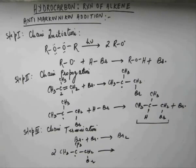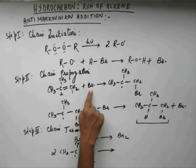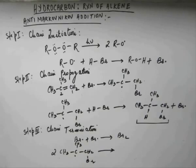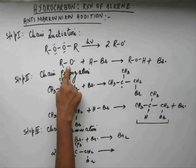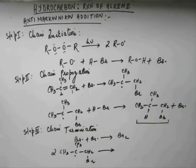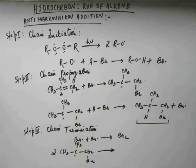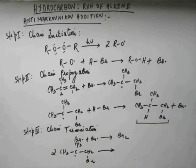So this is the mechanism for this reaction. The understanding is that anti-Markovnikov addition occurs only when BR dot is generated, and BR dot is generated only when peroxide is present. When we take peroxide, anti-Markovnikov addition takes place. If we take only HBr without peroxide, Markovnikov addition occurs, as seen in the last reaction. That is the difference. This is also called the peroxide effect — the effect of adding peroxide is that there is anti-Markovnikov addition.